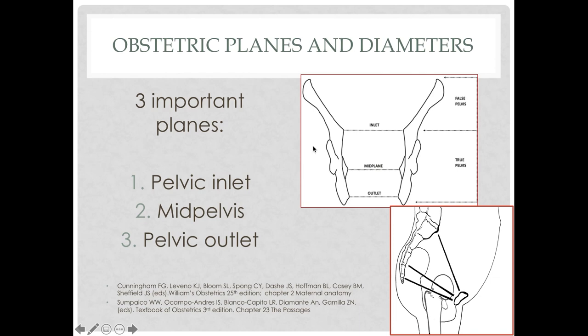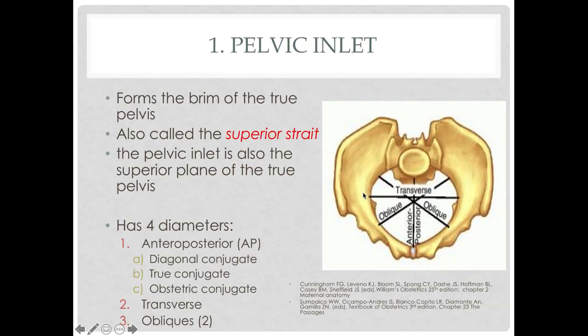Here are the three important planes. The uppermost plane is the inlet, followed by the mid-plane, and then the lowermost plane is the outlet. The pelvic inlet forms the brim of the true pelvis — it is also called the superior strait and is the superior plane of the true pelvis.